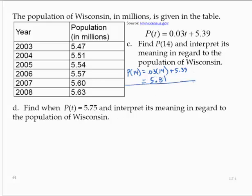So that would tell me t equals 14. So 14 was the number of years from 2000, so in 2014, the population of Wisconsin will be about 5.81 million.